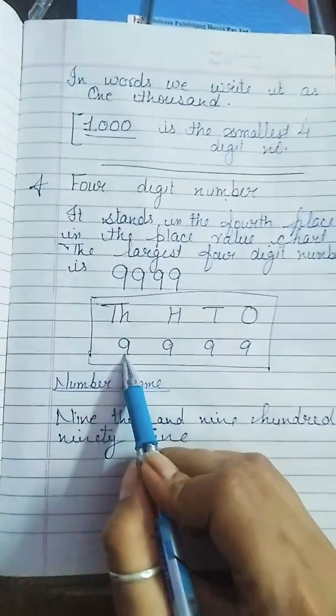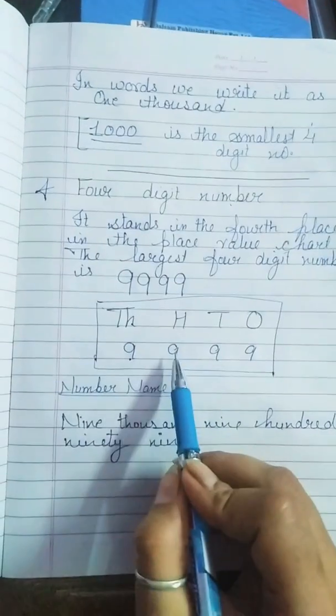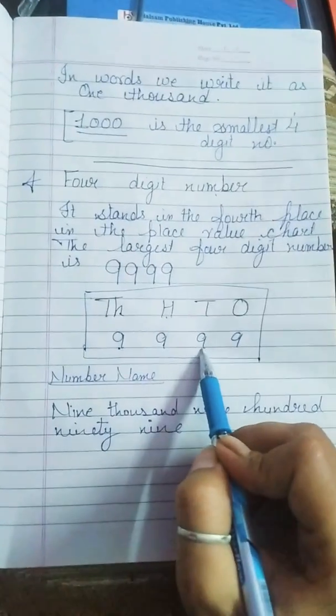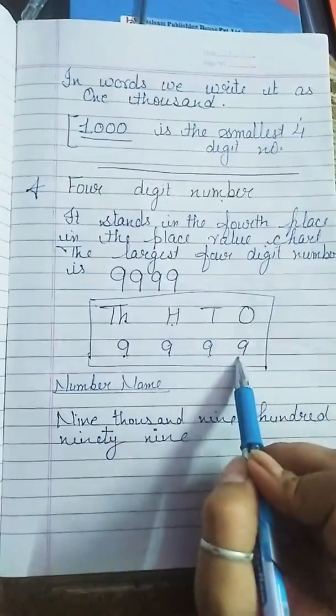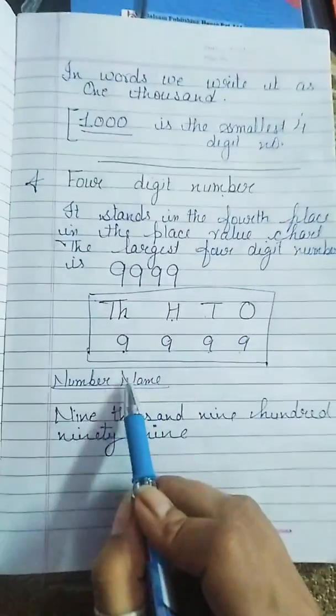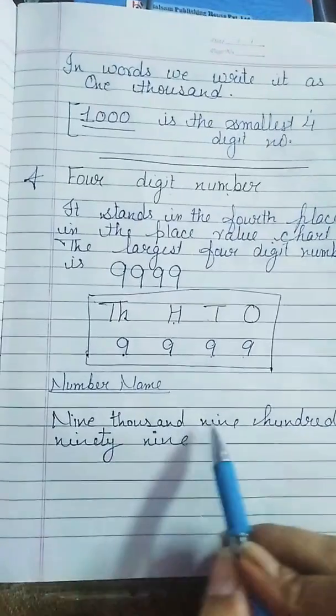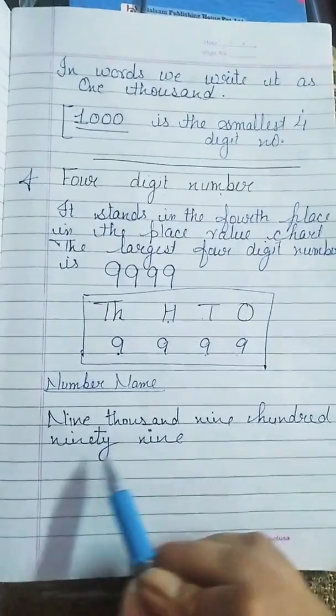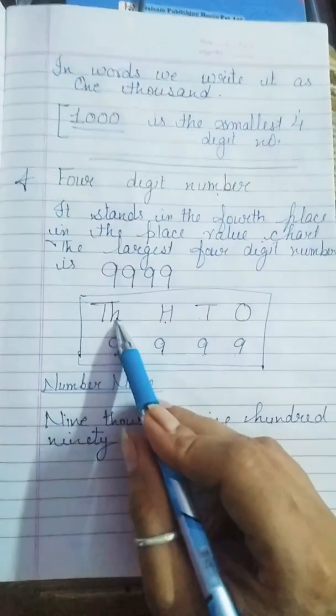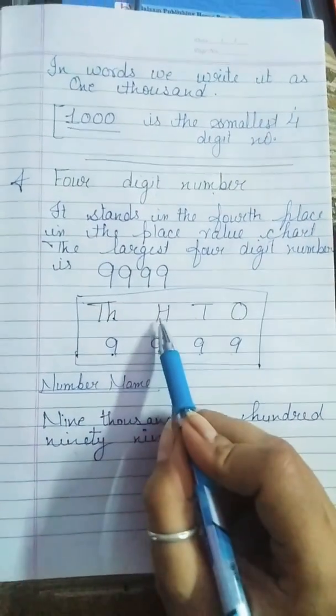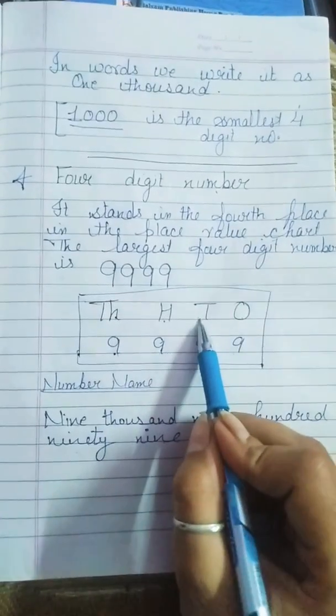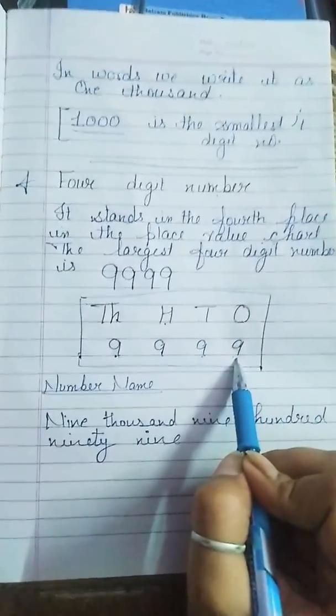9,000, 900, 9 tens, 9 ones. Doh us ke spellings kya se pad kaya ho jayegi? 9,999. Very simple.